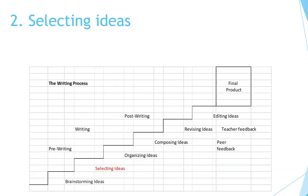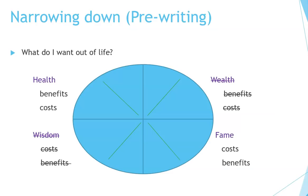The next step in the process is selecting ideas. This is still in the pre-writing stage — we're still at the bottom of the staircase. This is what we call narrowing down. You have the topic 'What do I want out of life?' Let's say you don't have time to write about all of these different topics, so you're just going to choose a couple — health and fame.